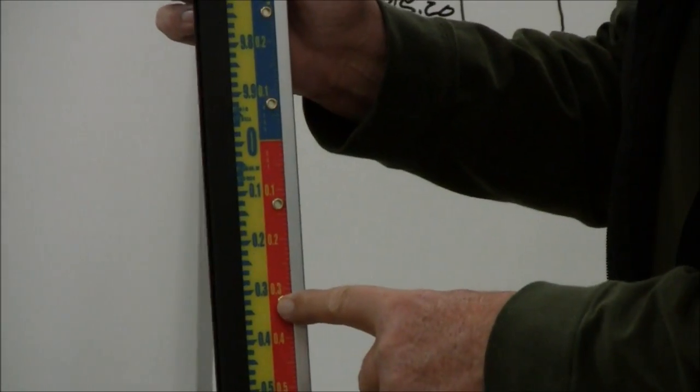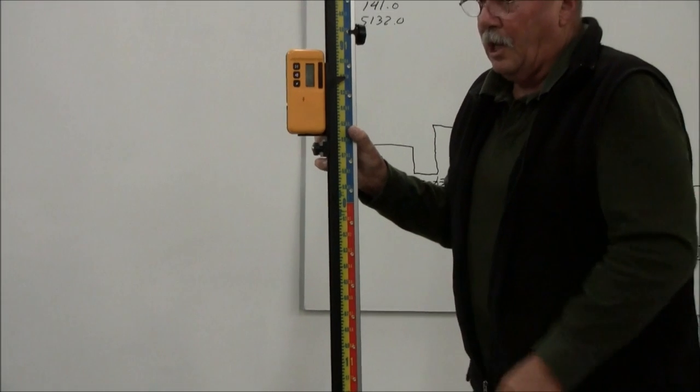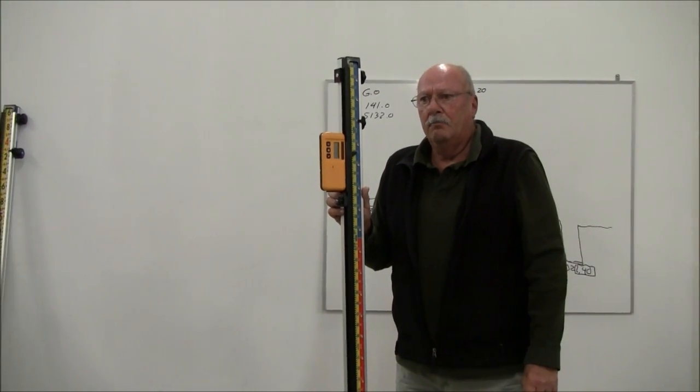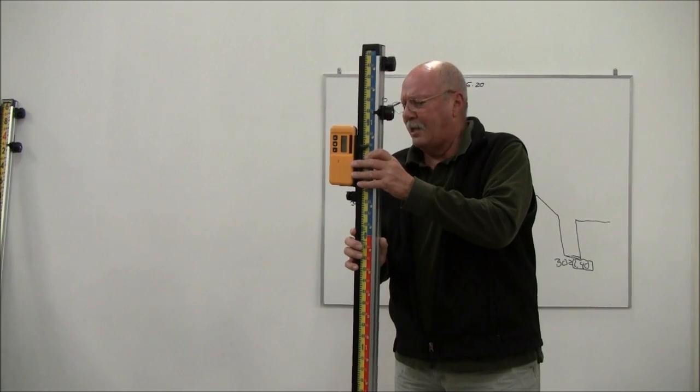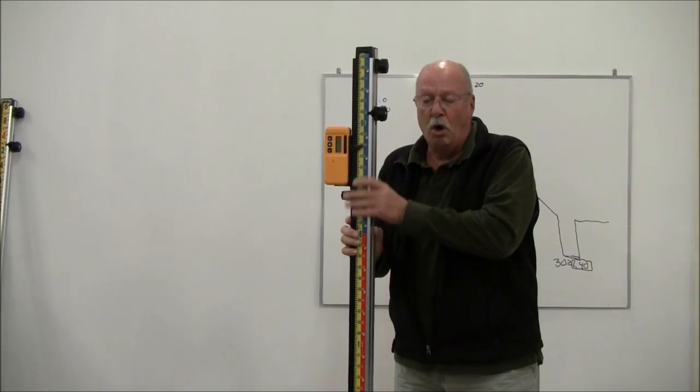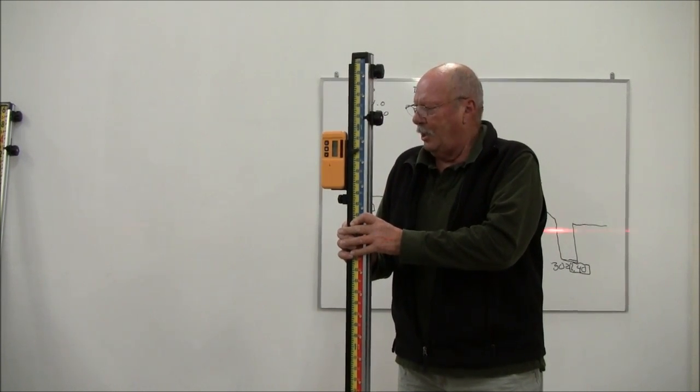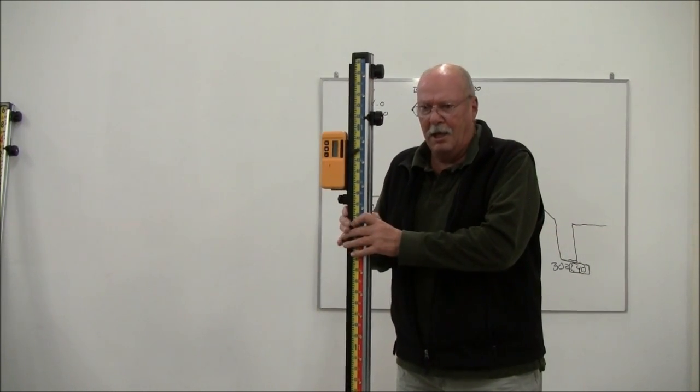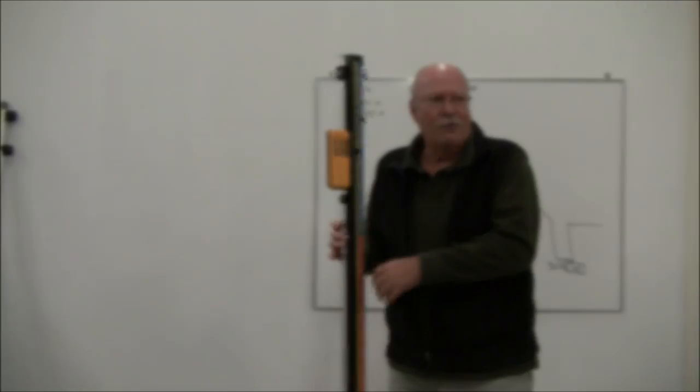So what's nice about this particular rod is it reads both true elevation and/or cut and fill. They're versatile. Again, they're fast. No math. I'm not carrying a calculator. I don't have a pad, I don't have a pencil. And I'm not going to be making any errors in terms of adding and subtracting, because the rod does it for me. Thank you very much.